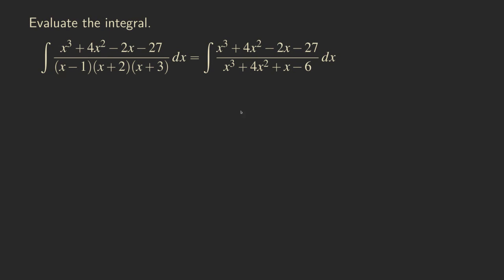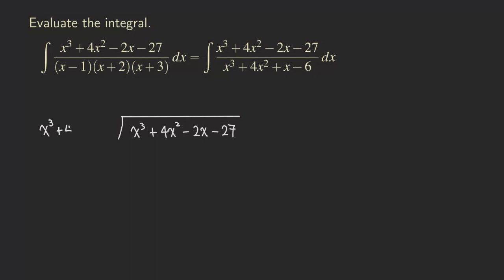Okay, so first, long division. Let's set up the long division right here. We are going to draw the division symbol, and then put the numerator inside: x cubed plus 4x squared minus 2x minus 27. Then put the denominator on the outside — x cubed plus 4x squared plus x minus 6. Okay, so now we have the divisor.